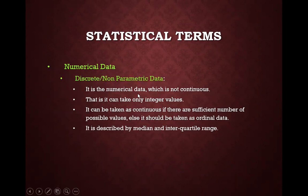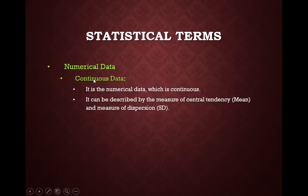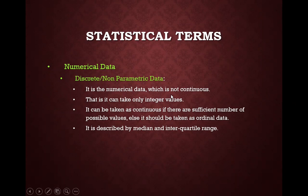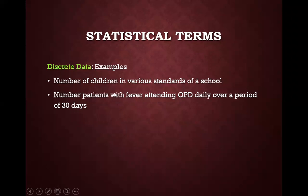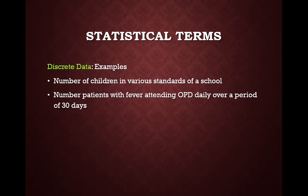Quantitative data can be of two types: discrete data and continuous data. Discrete data cannot take fractional values, and it is described in terms of median and interquartile range. For example, the number of students in your class can be 10 or 11 students — it cannot be 10.5 students. Another example is the number of patients with fever attending OPD daily over a period of 30 days. Such data is discrete data.